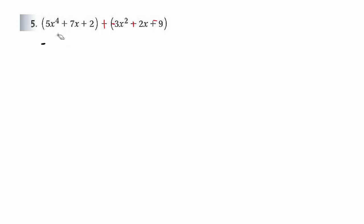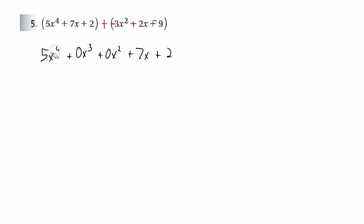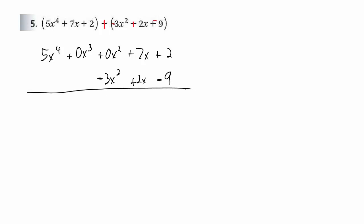So you would really have to lay it out like this. You have 5x to the fourth, and you wouldn't write anything underneath there. There is no x to the third power, but just to save space for it I am going to put that placeholder. There is no x squared term. There is a 7x term and a constant term. The advantage of putting placeholders for all the powers is that now I have a spot to put the negative 3x squared underneath, the plus 2x, and the subtracting negative 9.